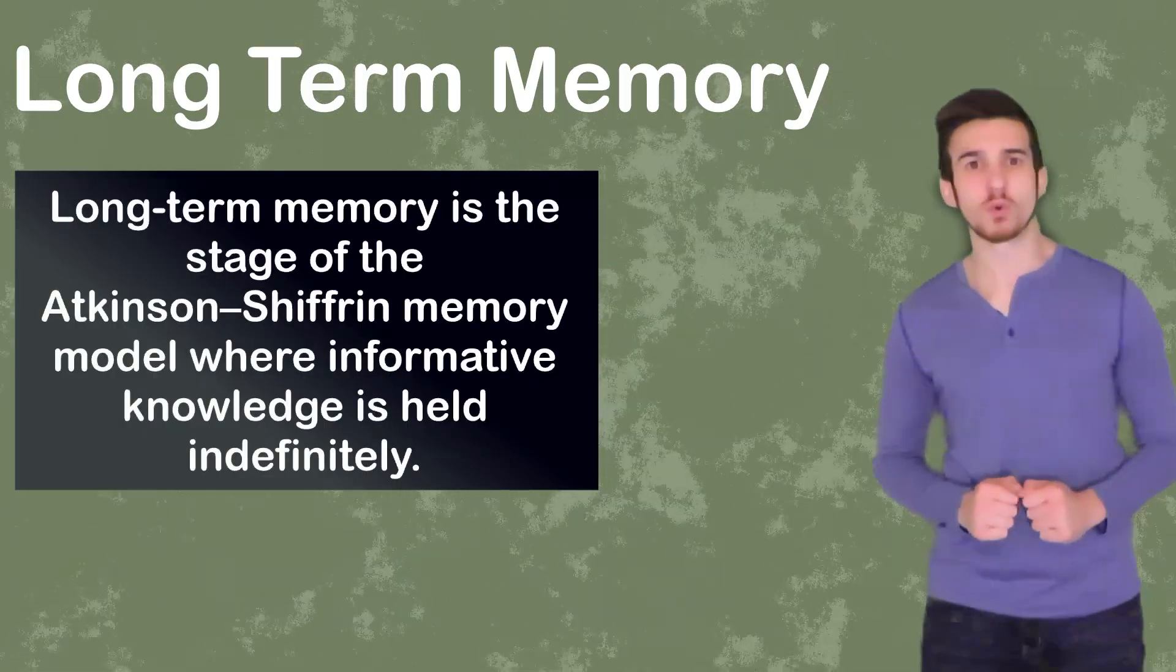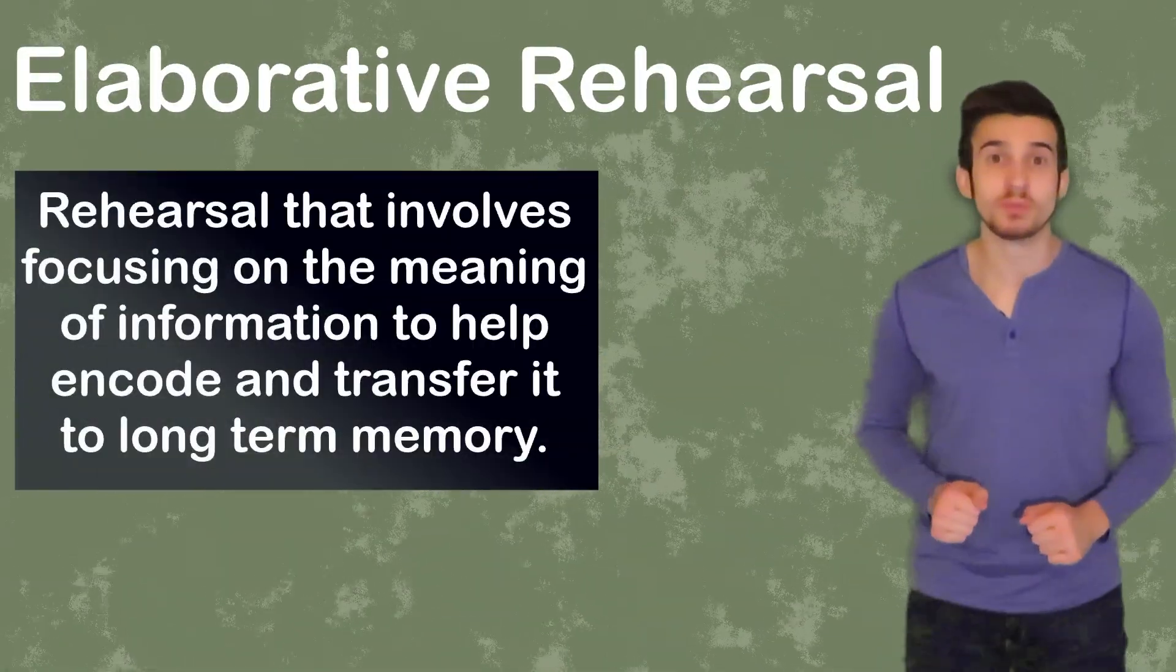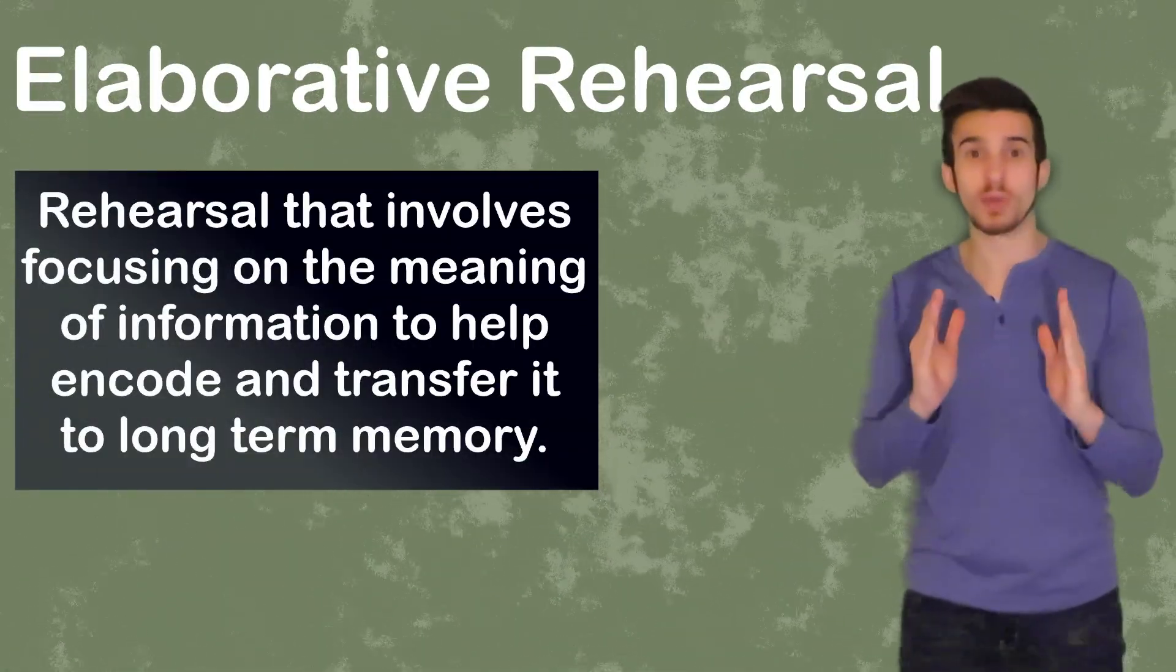Long-term memory is going to refer to the storage of information over an extended period of time. Technically any information stored in your brain longer than 20 seconds is considered a long-term memory. Theoretically speaking, long-term memory has a limitless capacity and can last forever. For information to be encoded into long-term memory, some type of rehearsal has to be done. We've already talked about the basic act of maintenance rehearsal where we just repeat information. Now we're going to talk about a more detailed form of rehearsal known as elaborative rehearsal or deep processing. Elaborative rehearsal is going to be connecting old memories with new memories in order to form a connection to these memories to try and increase the encoding of this new information.